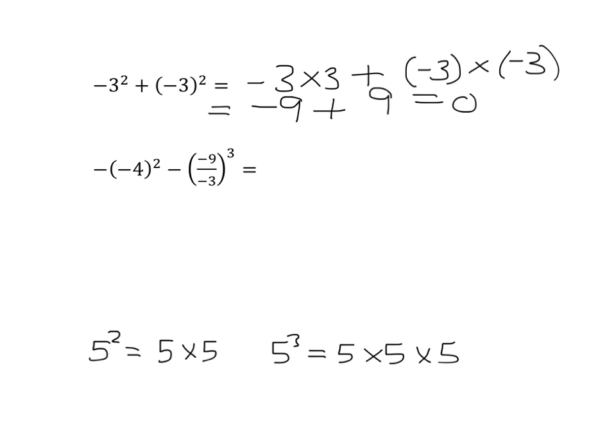Okay. So you should have said, okay, you've got this negative here. That'll just stay. And then, just like up here, this negative 4 squared means you've got negative 4 multiplied by negative 4. Negative times negative is positive. 4 times 4 is 16. Then, in this bracket here, you've got negative 9 over negative 3. Negative over negative is positive. 9 divided by 3 is 3.